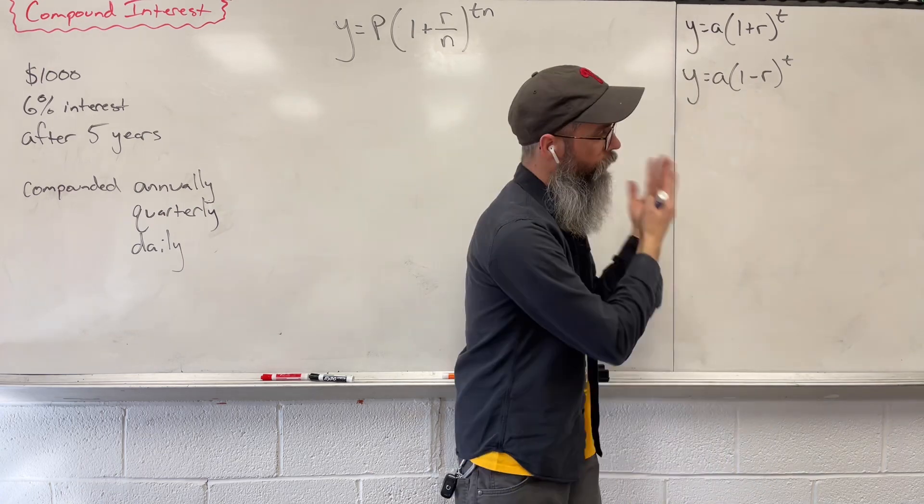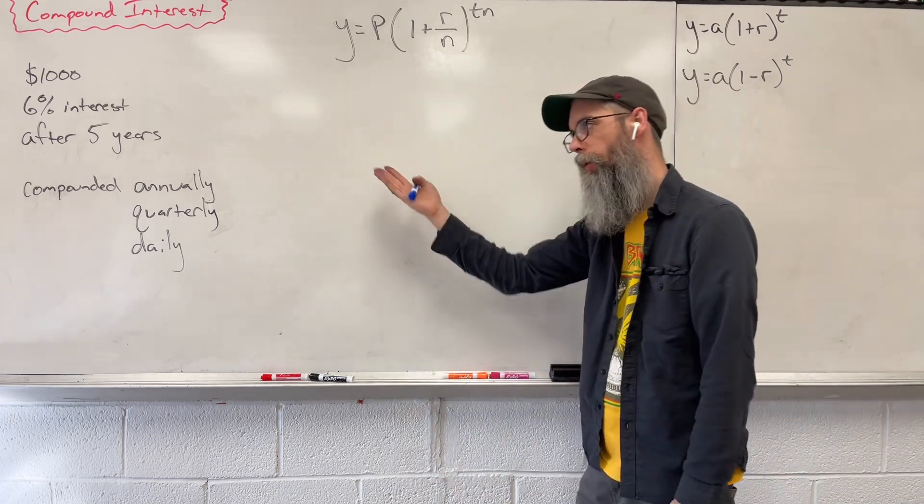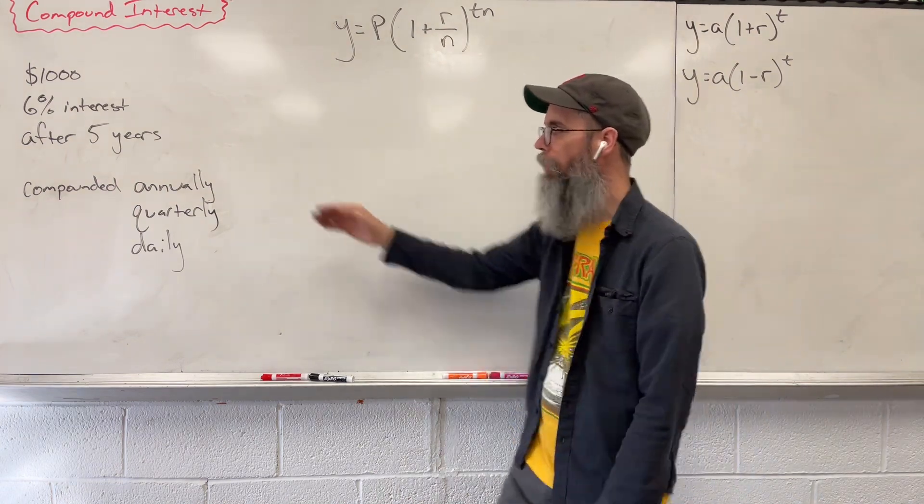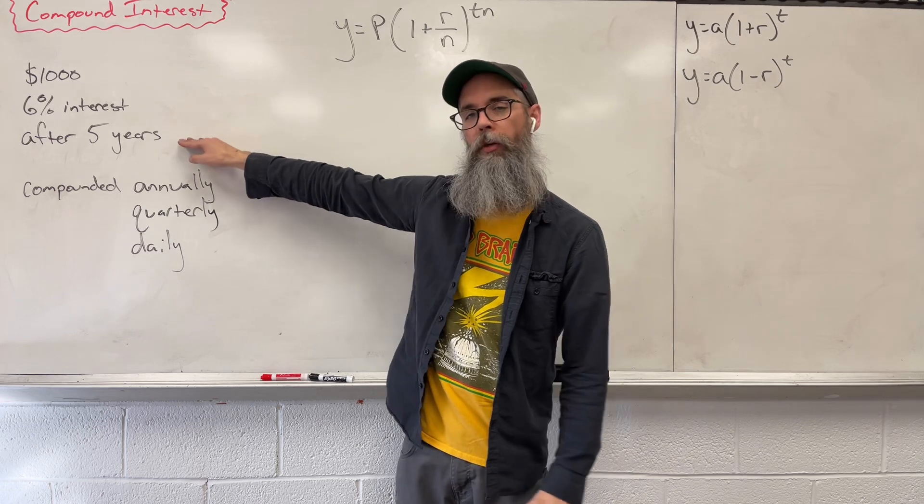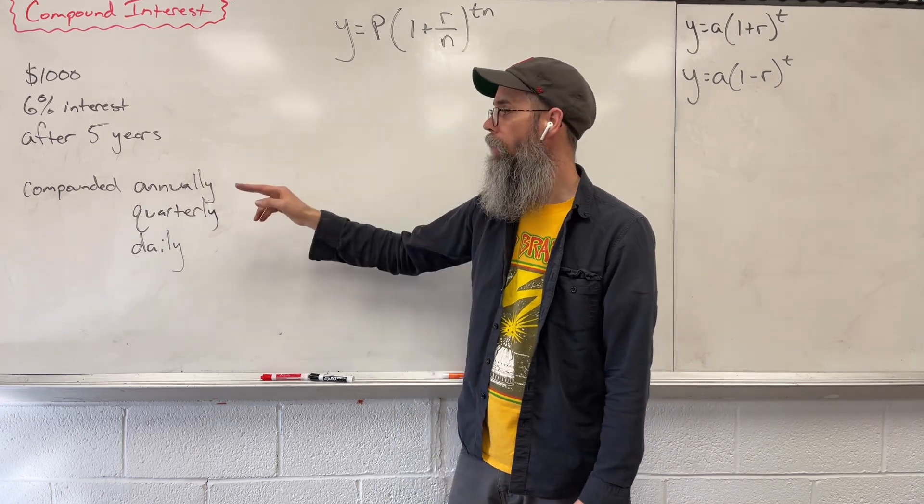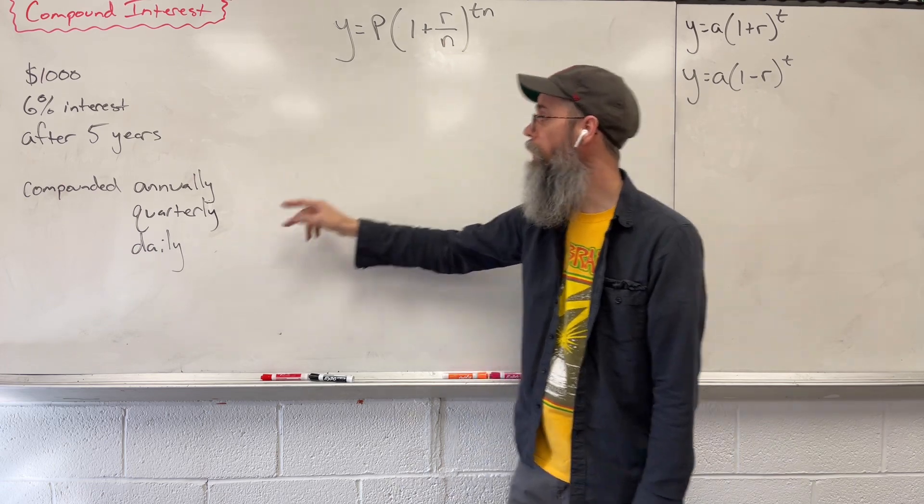So like exponential growth and decay problems, we could also have word problems. Here we extracted all the important information. We're going to invest $1,000 at 6% interest, and we're going to look at it after five years and say, how much money do we have if we compound it annually, quarterly, or daily?